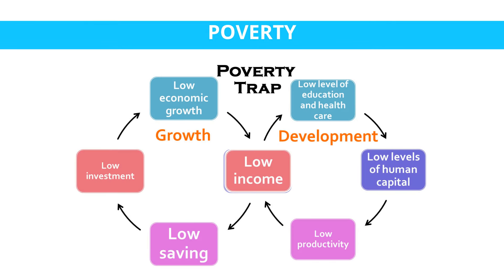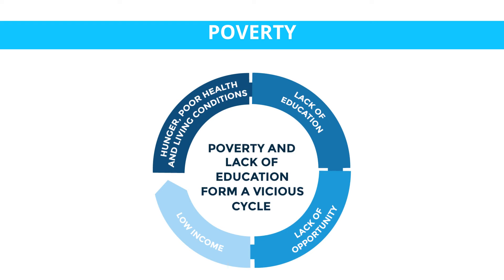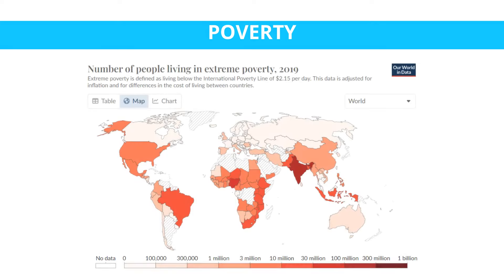Persistent poverty can hinder economic growth by limiting human capital investment, productivity, and innovation. A large impoverished population means lost potential for economic contributions. Poverty can create a vicious cycle where limited access to education and opportunities perpetuates disadvantage across generations. Breaking this cycle is vital for sustainable progress. Poverty is not confined to one region or country — it is a global challenge, and addressing it is crucial for fostering peace, stability, and achieving global sustainable development goals.